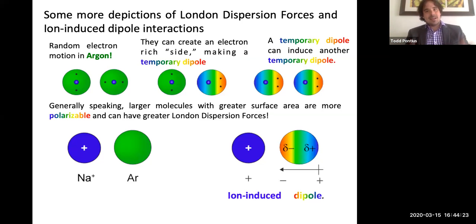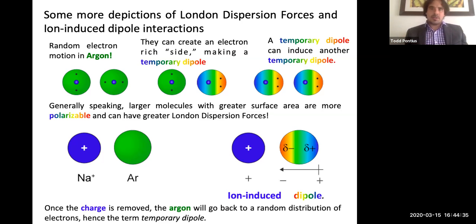So what we end up getting then is an ion induced dipole because this temporary dipole in argon, it's not permanent. The electrons are shifted more toward the positive charge, but if we remove that positive charge, that dipole is going to disappear and the electrons will be back in their random movement. So hence temporary dipole.